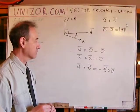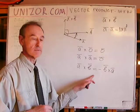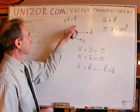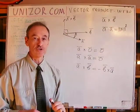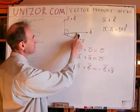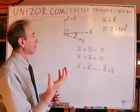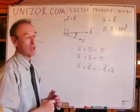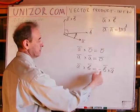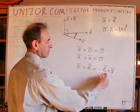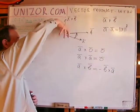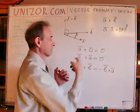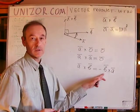Why is it anti-commutative? If you move from A to B using the right-hand rule, you go in one direction. If you move from B to A, the direction reverses. So the magnitude is the same, but the direction of the vector product is opposite — that is why the minus sign appears. This is written as A cross B equals negative B cross A.